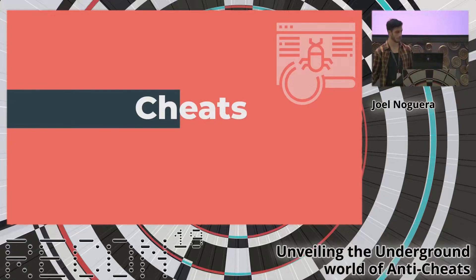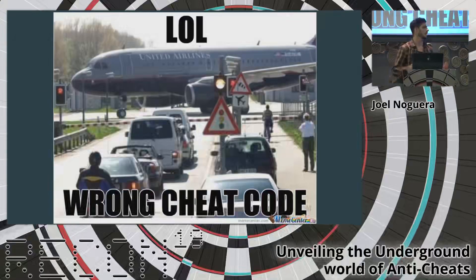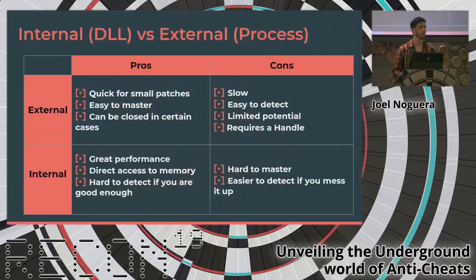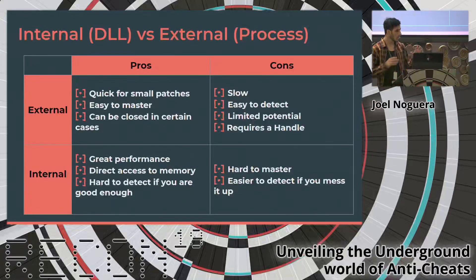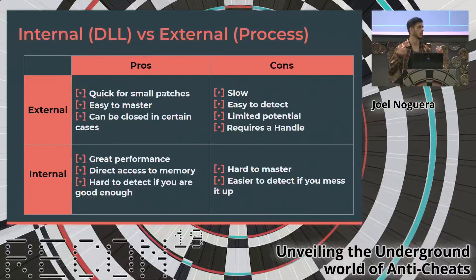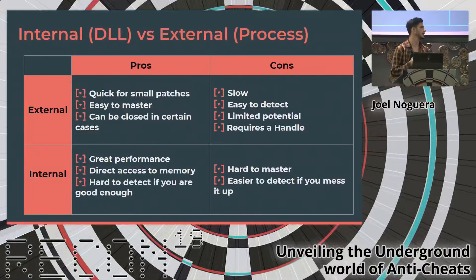Now that we understand anti-cheat components, we need to see the other side: cheats. If you've played a game, you know that feeling when you see someone running across the map at full speed or always aiming at your head. We need to understand what cheats do in order to bring these capabilities to users. One way to classify a cheat is by how it integrates with the game process. An internal cheat is a DLL injected into the game — there are multiple ways to inject a DLL, and if done well it's really hard to detect.